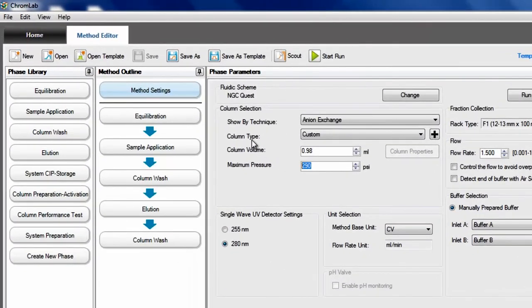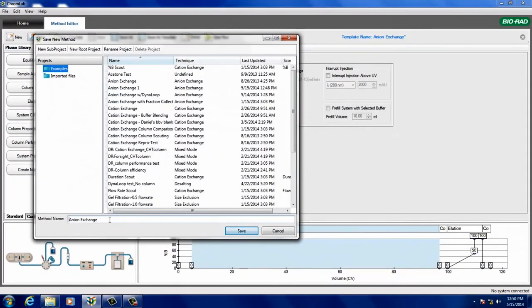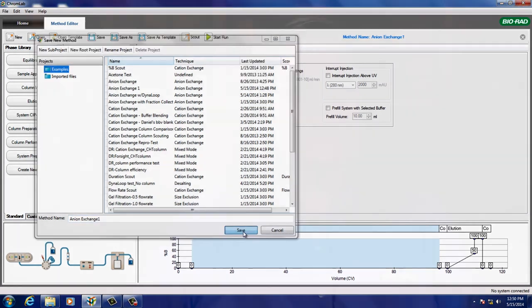The back pressure limit must be set to 1,000 PSI when using the Dyna Loop with the NGC system. Now highlight the sample application phase, change the inject sample from loop/static loop to Dyna Loop, and then change the injection volume to the desired volume you just loaded into the Dyna Loop. Now name and save your method and you're ready to go!